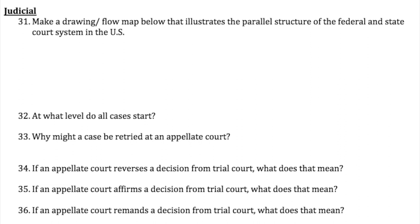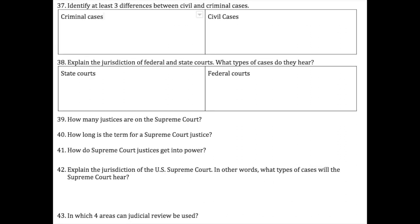Differences between civil and criminal cases: criminal cases regulate the conduct of individuals, punishment can include incarceration, and they determine guilt by addressing criminal acts. Civil cases address disputes between citizens, determining who is liable — meaning responsible — and the punishment is compensatory, meaning they pay money. The best example is the O.J. Simpson trial: there were two trials — the criminal case, where O.J. Simpson was found innocent and served no jail time, versus the civil case, where he lost and had to pay a large sum of money to the parents of Nicole Brown.